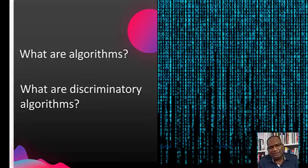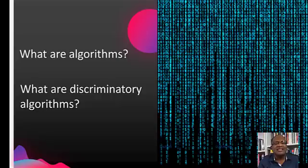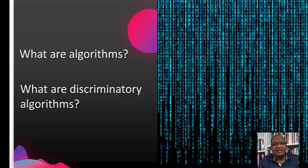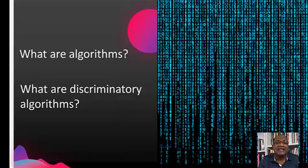What are algorithms? An algorithm is a set of rules to be followed in calculations or other problem-solving operations, especially by a computer. We depend on algorithms daily to enhance our lives. Algorithmic discrimination takes place when a computer system reflects the implicit values, principles, ideologies, and morals of its human designer in its calculations.